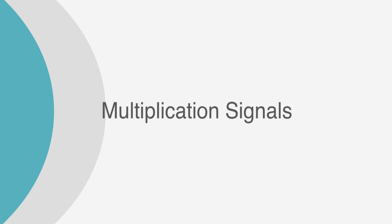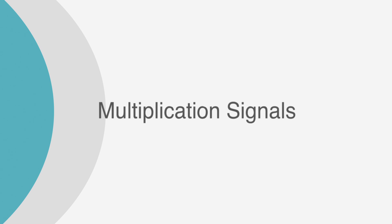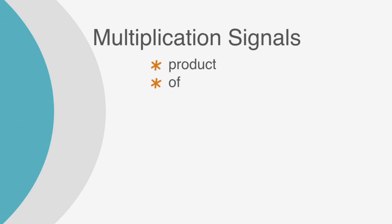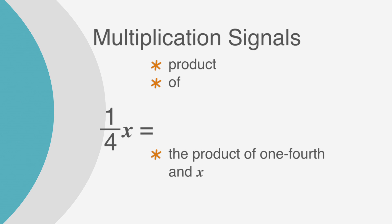If you're being asked to multiply, you'll typically see the words 'product' or 'of.' So 1 fourth times x could also be written as the product of 1 fourth and x, or 1 fourth of x.